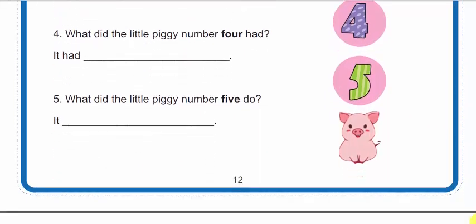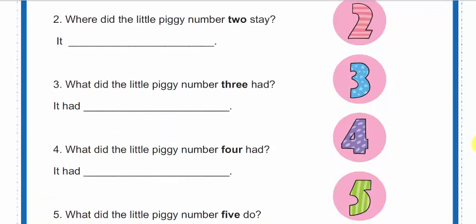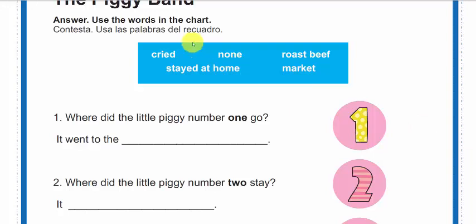La cinco y última. What did the little piggy number five do? ¿Qué hizo el puerquito número cinco? Bueno, y la opción que nos queda es... Cried.